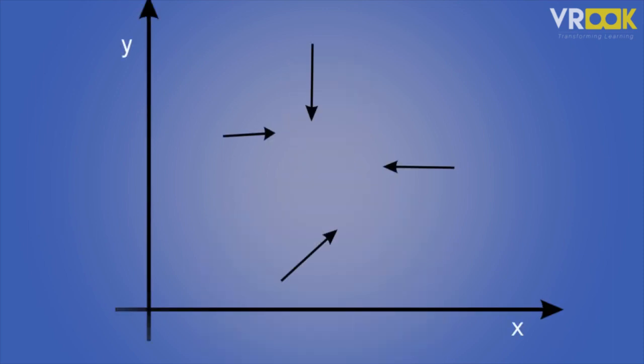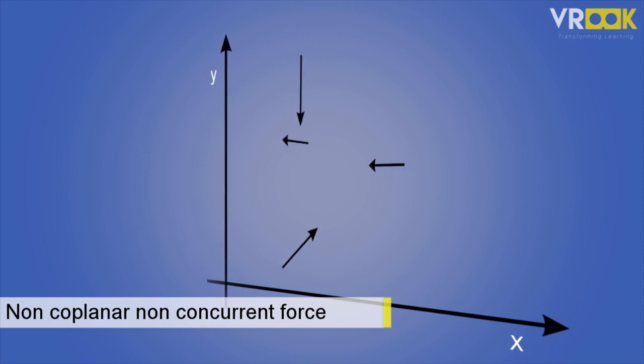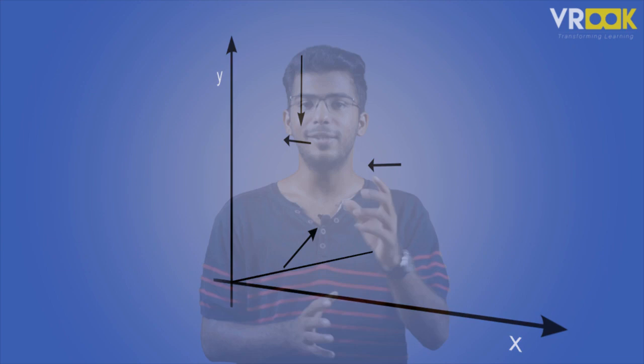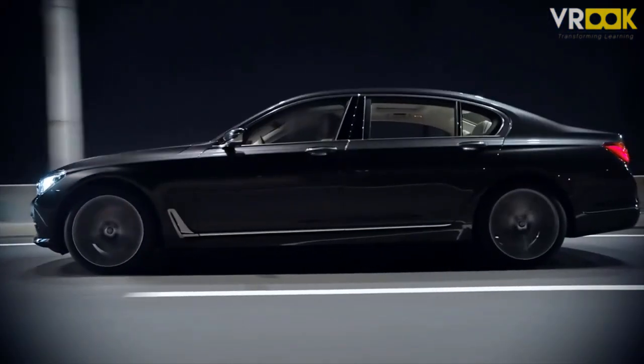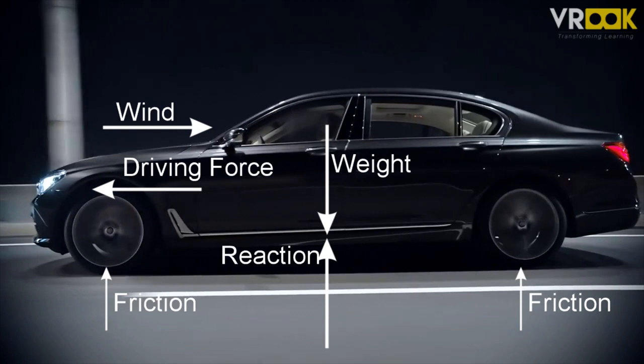But what if a force is in multiple planes? If the forces do not lie in a single plane and do not pass through a single point, it is a non-coplanar non-concurrent force system. The forces can be in any plane and act anywhere on the object. The best example is a moving car: the weight acts downwards, there is a reaction force, friction at the wheels, a driving force, and wind opposing the driving force — all acting on a single body in different planes at different points.